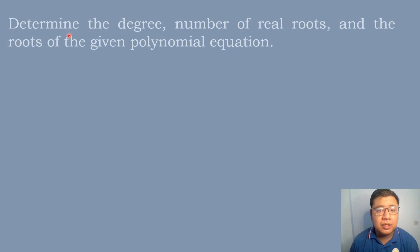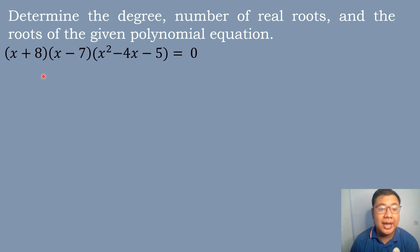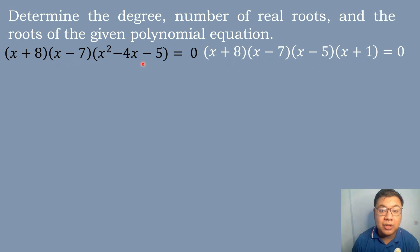Let's have our next example. Determine the degree of polynomial, number of real roots, and the roots of: (x + 8)(x − 7)(x² − 4x − 5) = 0. Since the equation is not yet expressed as a product of linear factors because it has a quadratic expression, we need to factor x² − 4x − 5. The factors are (x − 5)(x + 1), giving us (x + 8)(x − 7)(x − 5)(x + 1) = 0.